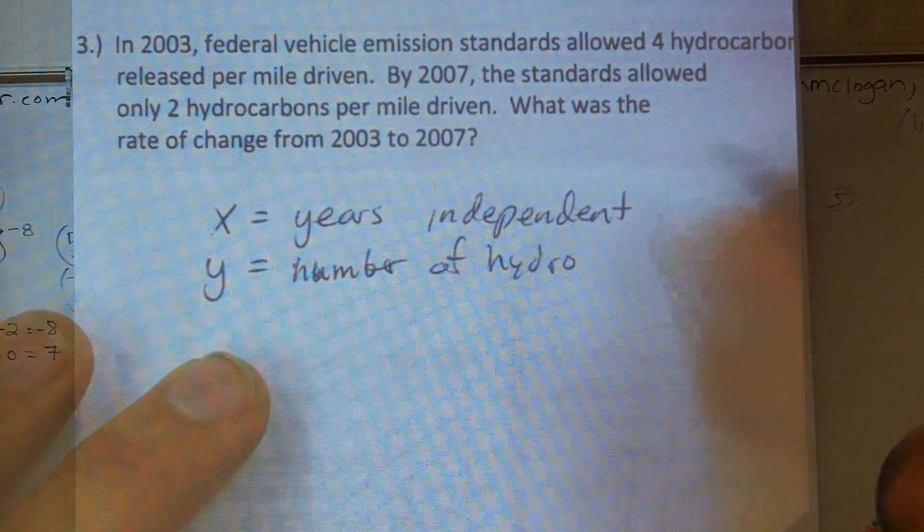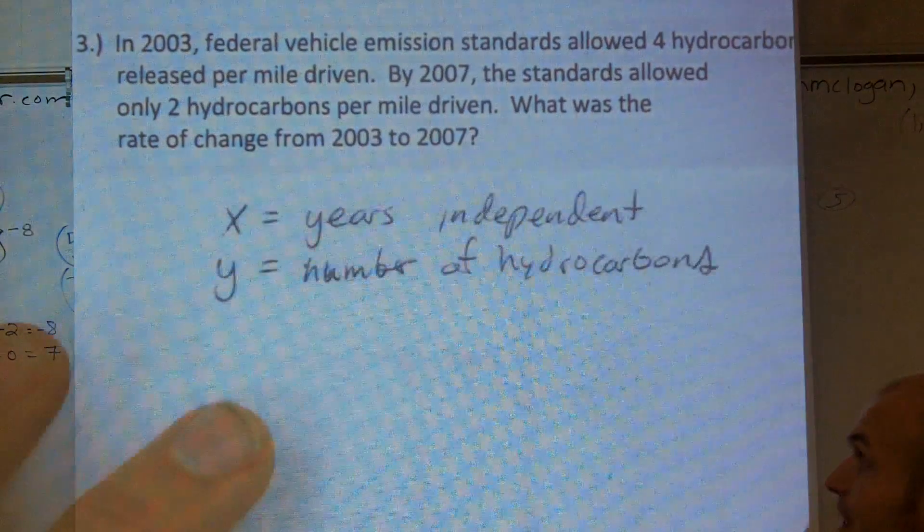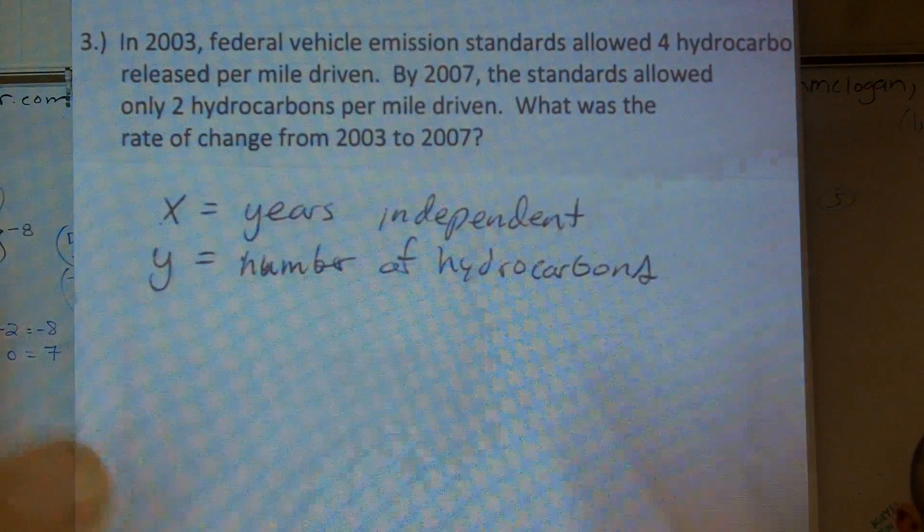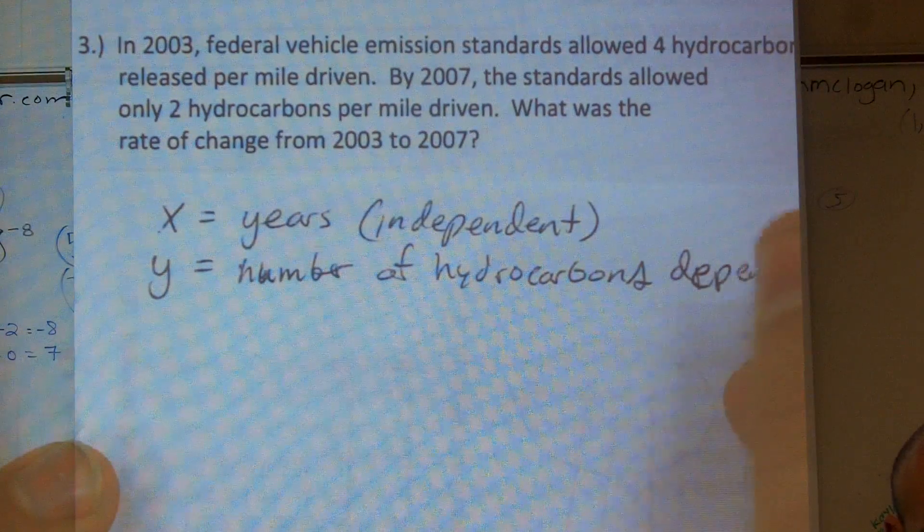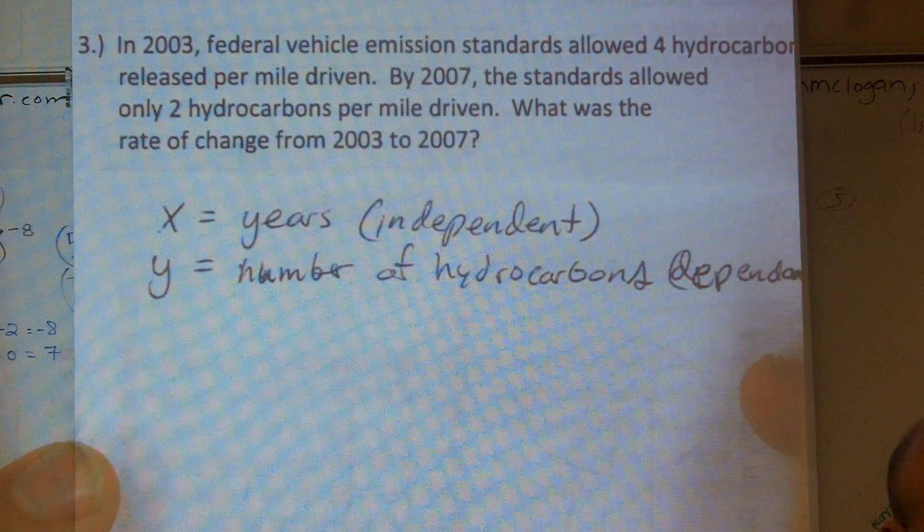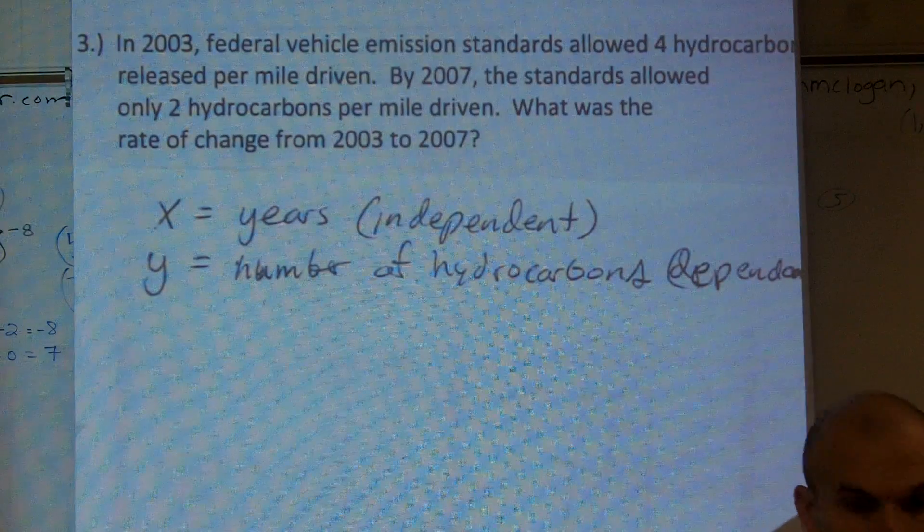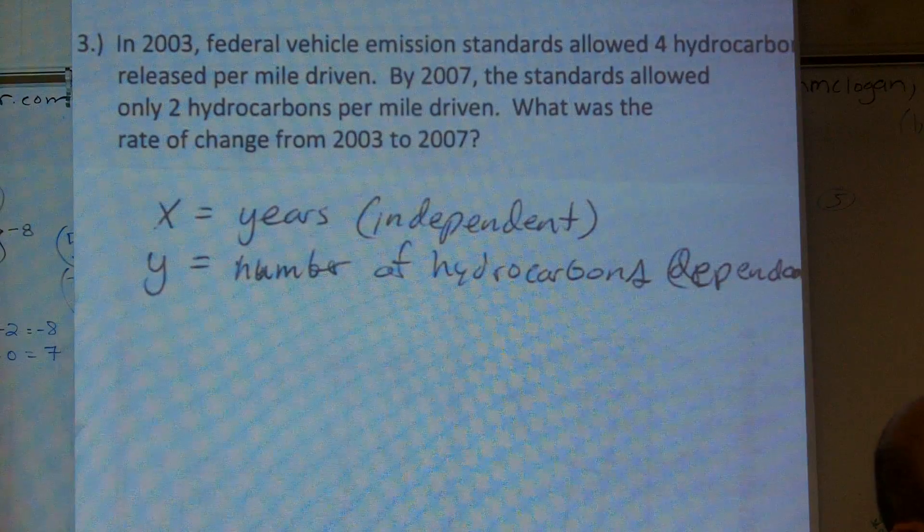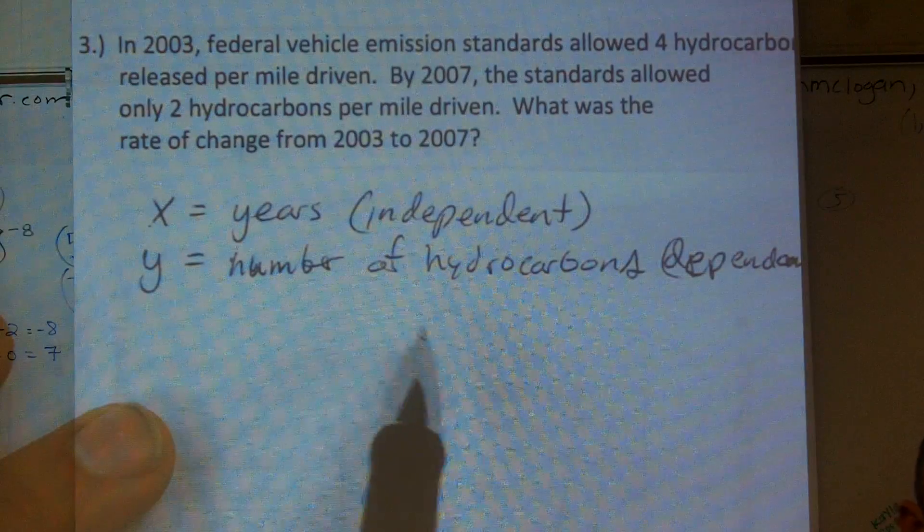And when you guys are doing these, remember when we have word problems, you have to make sure that you write out what your variables are. And these aren't really any variables, but you guys should understand what your independent and your dependent variables are, or values at least here are.